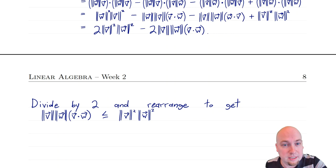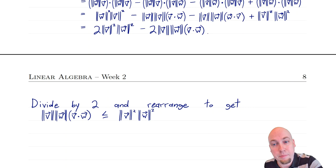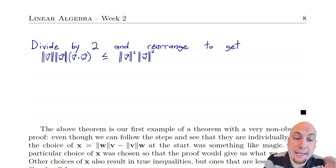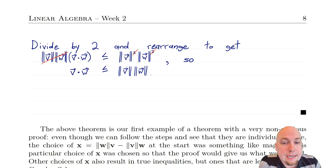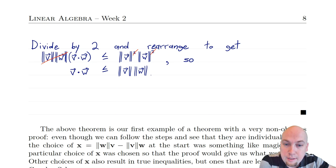After doing those two things, we get: length of v squared times length of w squared is greater than or equal to length of v times length of w times the dot product. Now I'm going to cancel common terms — I've got a length of v on both sides and a length of w on both sides, so I cancel those. When I do that, I'm left with just the dot product of v with w on the left and one copy each of length of v and length of w on the right. The squareds go away.